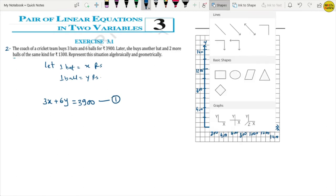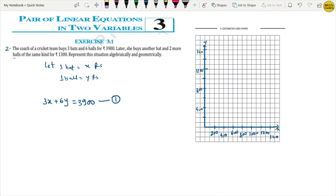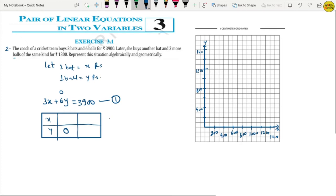So, for this, we will do plotting here. We will take two points x, y. If I will put 0 in place of y, how much will I get x? x here and 3 will divide here. So, how much will I get? I will get 1,300.